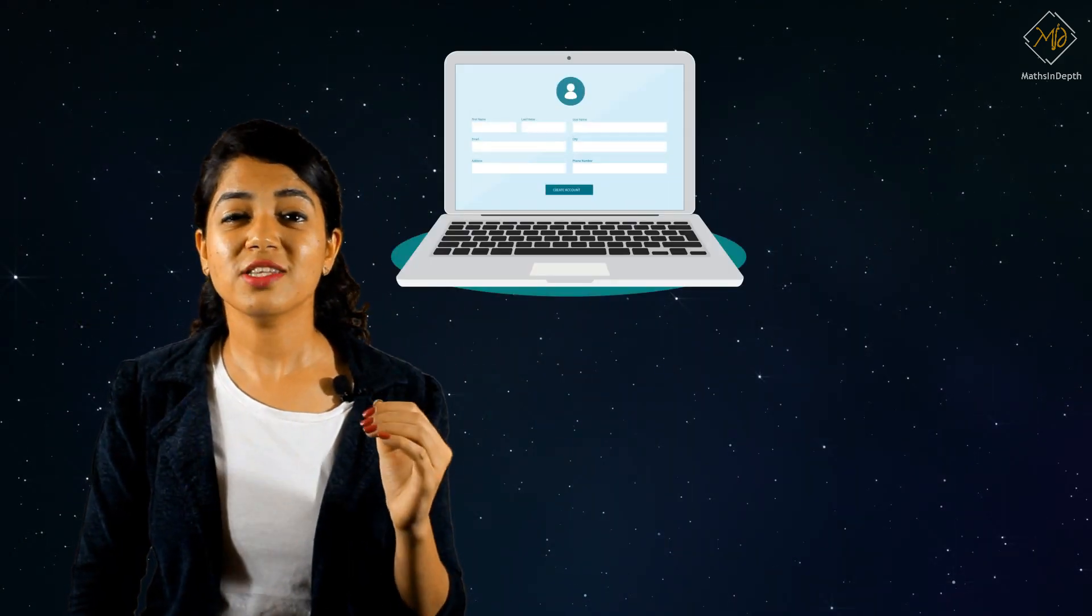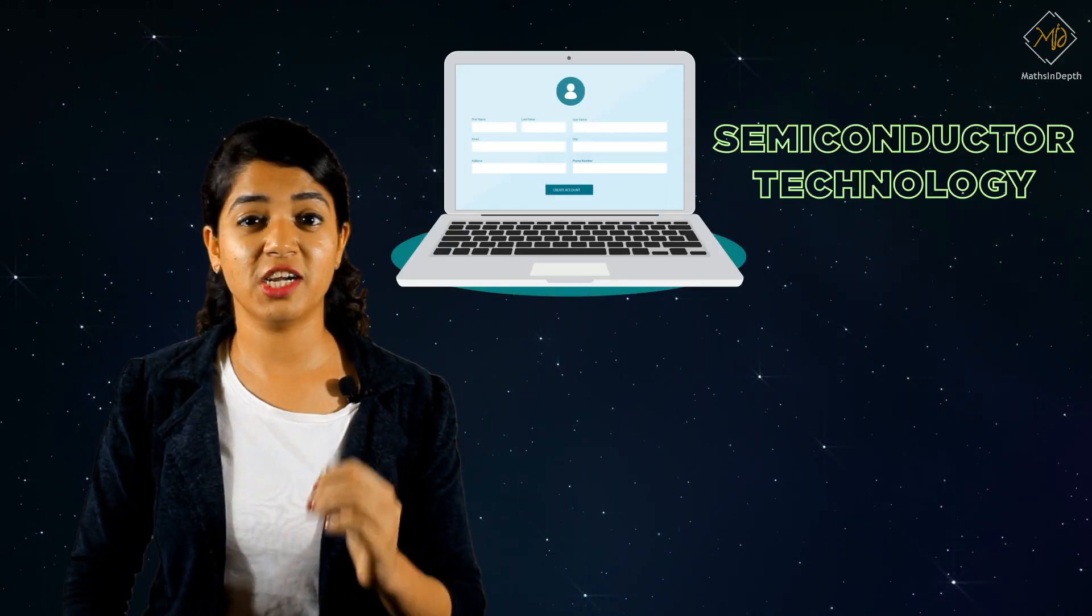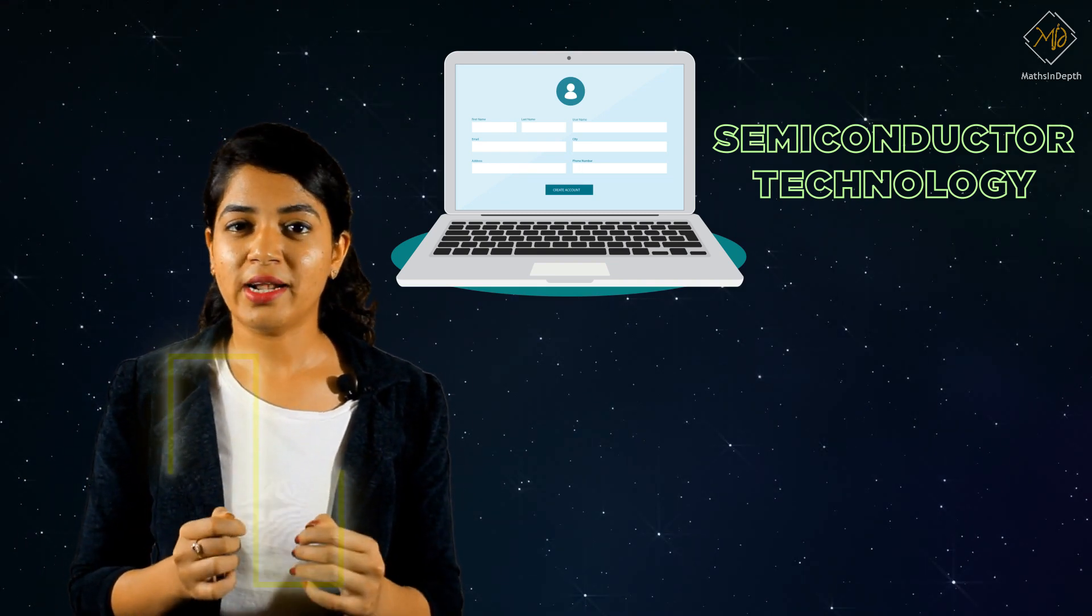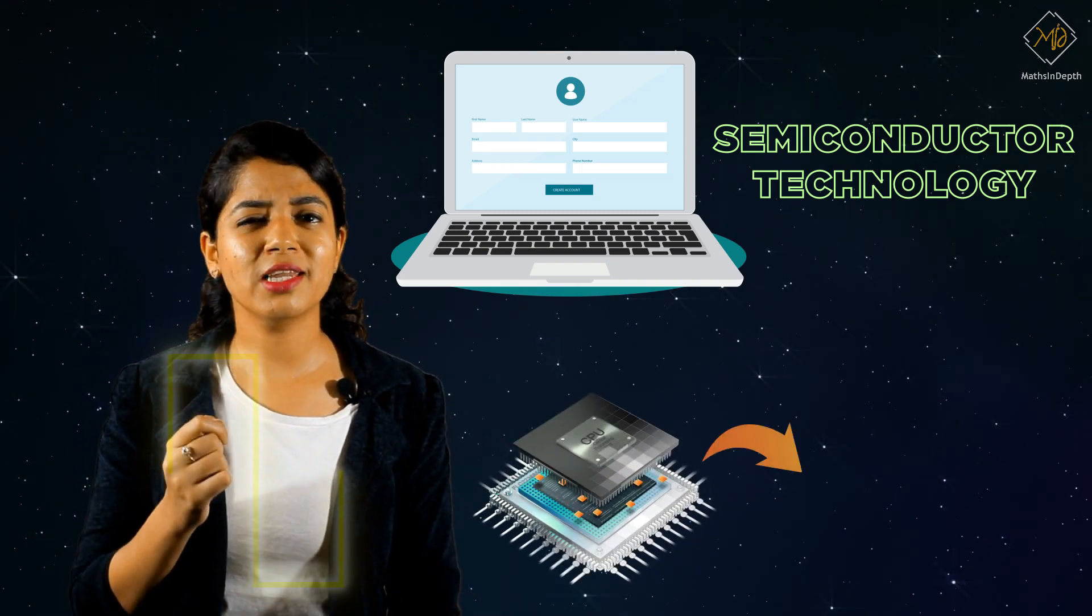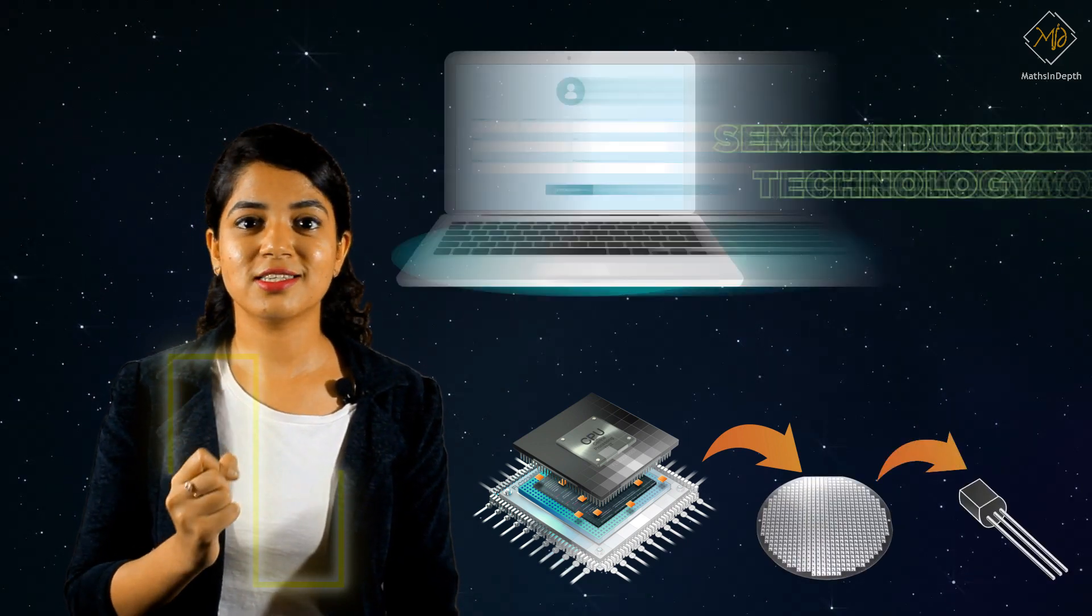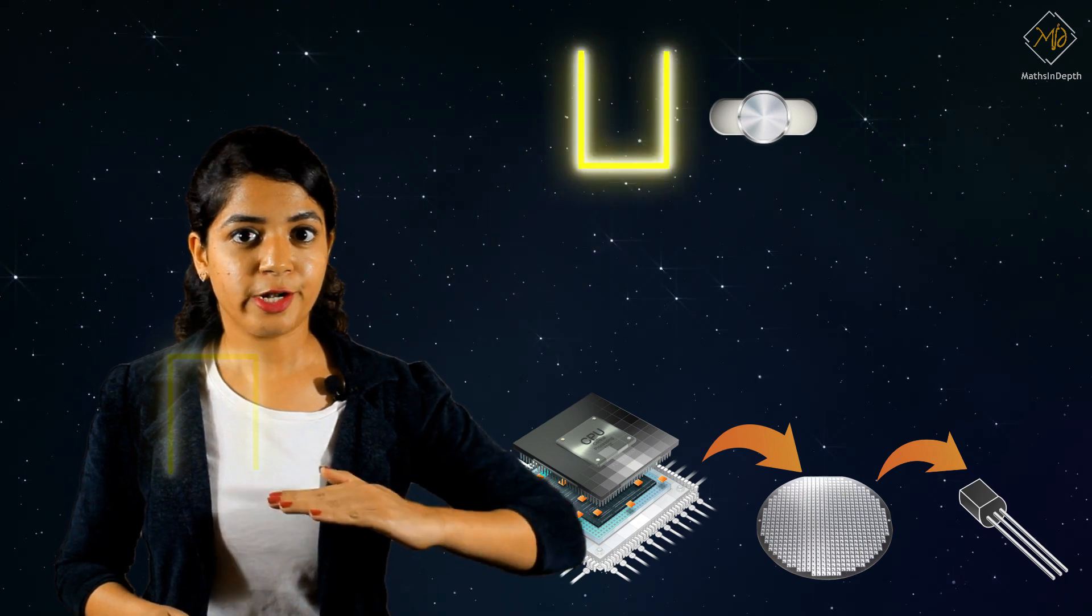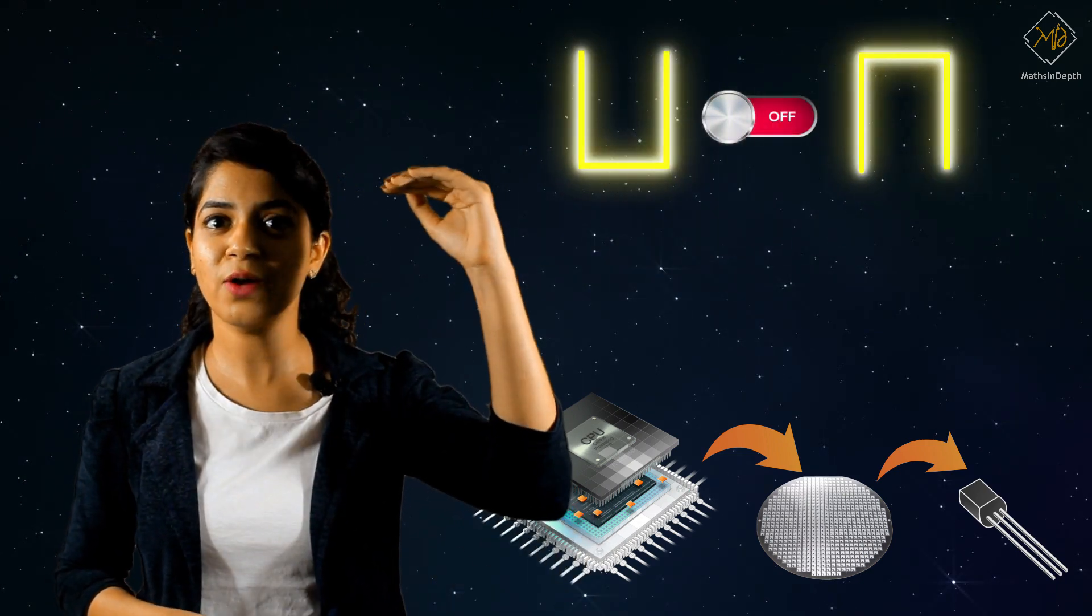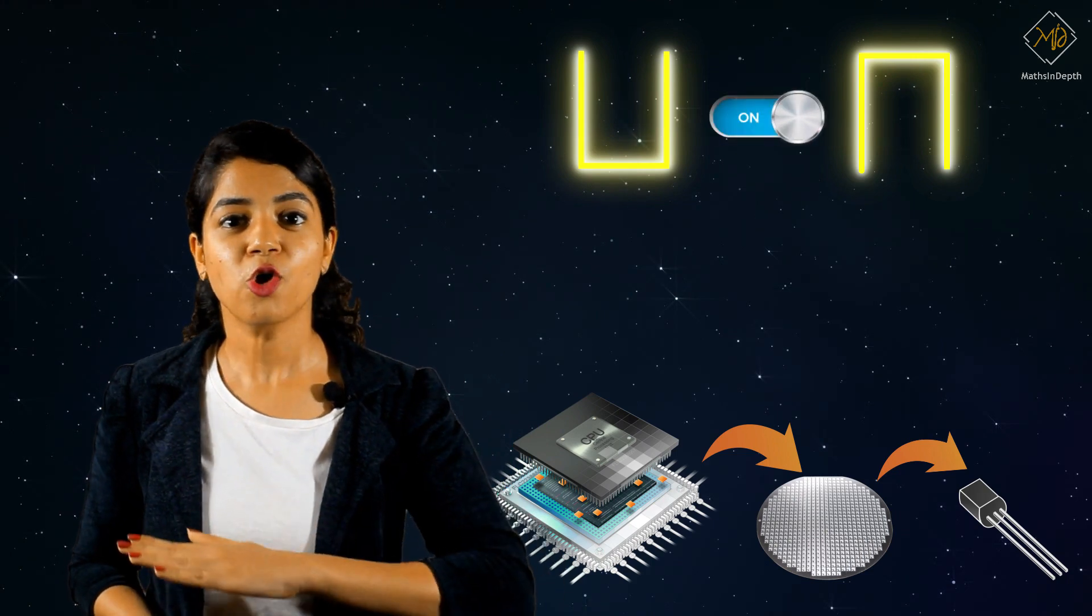Modern computers are based on semiconductor technology which understands high and low voltages. The CPU, that is our processor, consists of millions of tiny components called transistors. These transistors act as switches. At low voltage, the transistor acts as an open switch, and at high voltage, it acts as a closed switch.